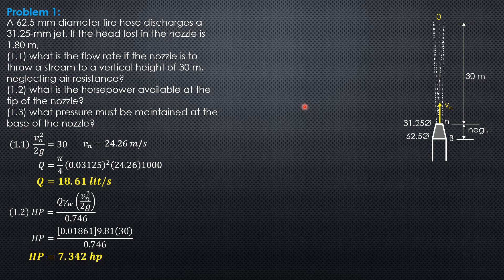Finally, the pressure that must be maintained at the base of the nozzle. We write the energy equation between point B and point N because the head loss or energy loss between B and N is given as 1.8 meters. Datum through B or N, because this distance is negligible since it's not mentioned in the problem.